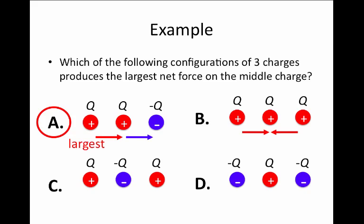In answer C, the right-hand charge exerts an attractive force toward the right on the middle charge, while the left-hand charge exerts an attractive force pulling the middle charge to the left. These two forces cancel to zero and the net force is zero. Similarly in case D, the left-hand charge exerts an attractive force to the left and the right-hand charge exerts an attractive force to the right, again giving a net force of zero. So A is the only answer in which there is a non-zero net force on the middle charge.